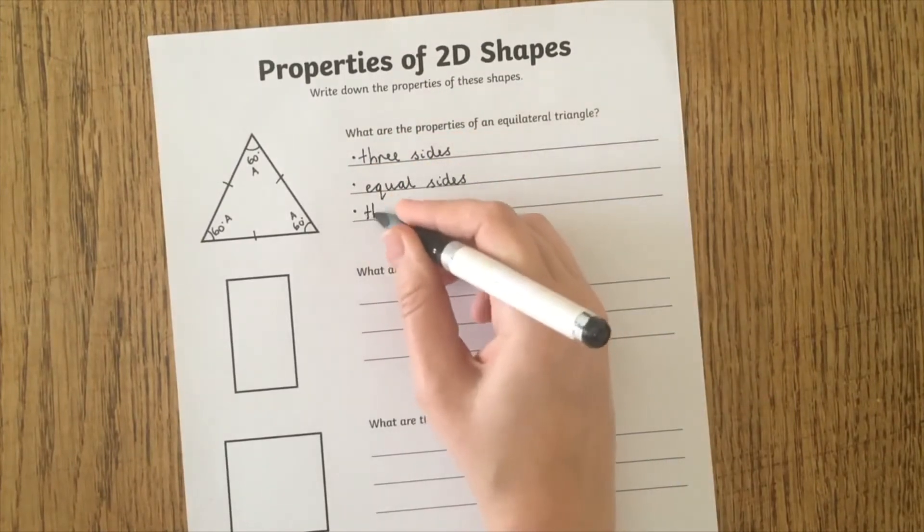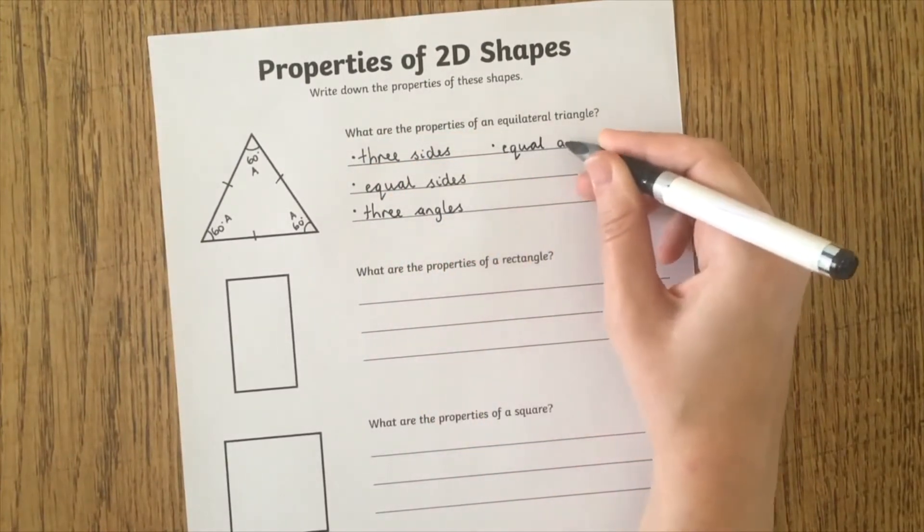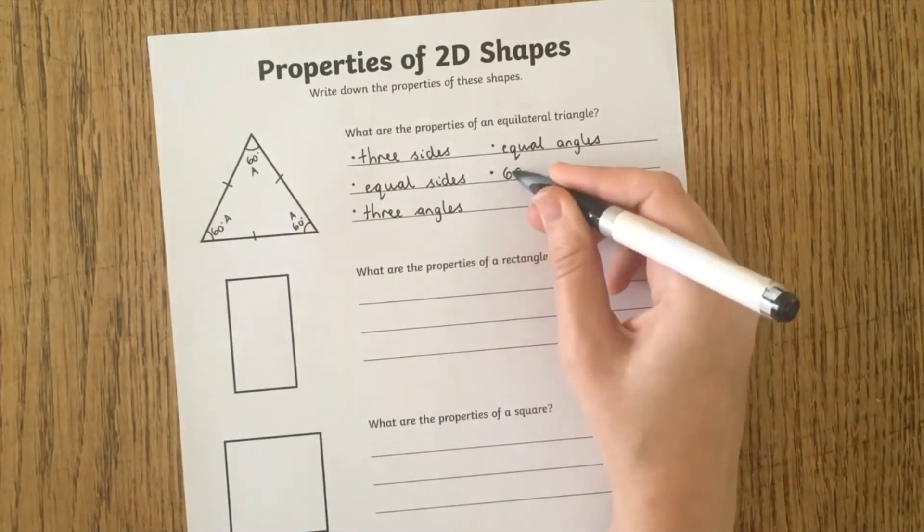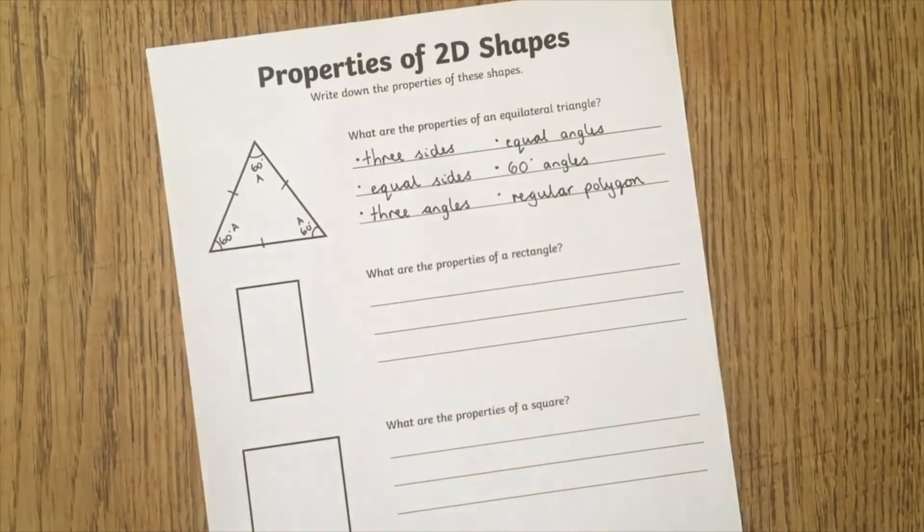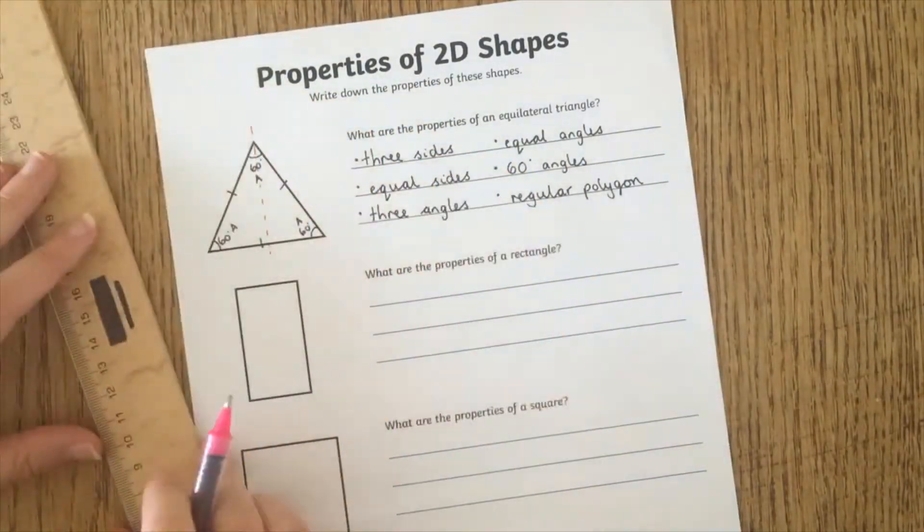You could prompt them to think of number and length of sides, number and size of angles, pairs of parallel lines or lines of symmetry. Make sure they add as much detail as possible.